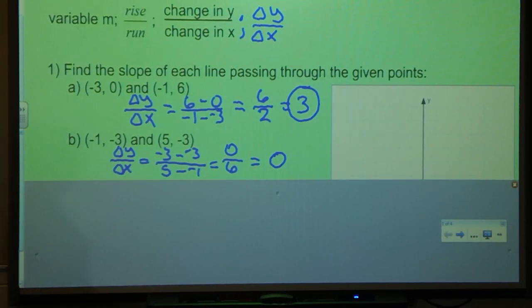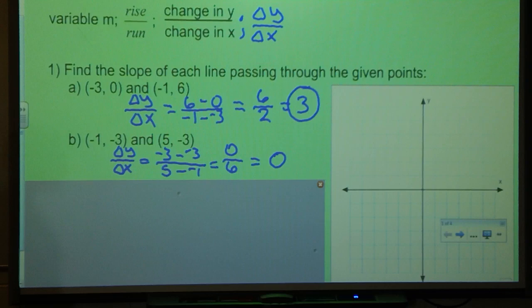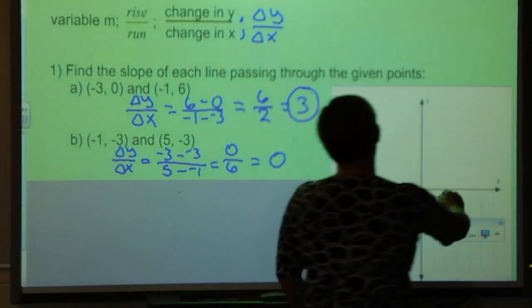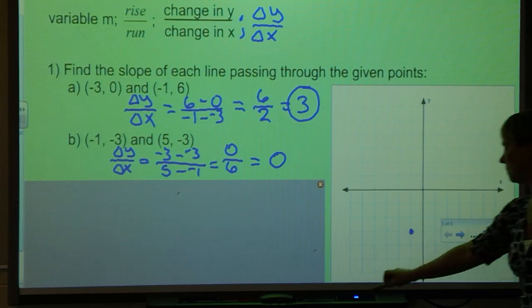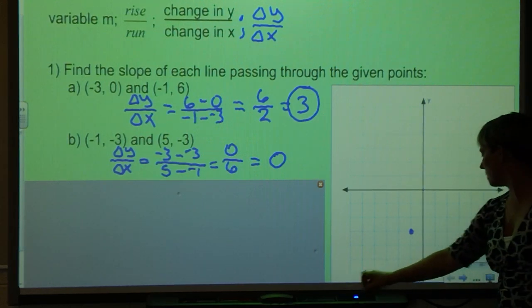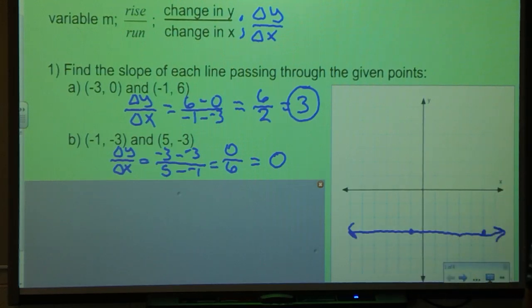Let's take a look at what this would look like on our coordinate plane. If I were to graph these two points I would graph (-1, -3) and I would graph (5, -3). That would give me this line right here. Notice that line has a 0 slope. Remember slope is our steepness of our line. Since that line is flat horizontal it has no steepness, so it has a 0 slope.